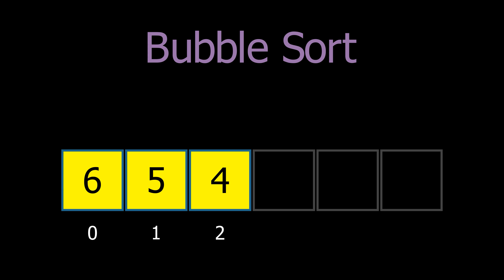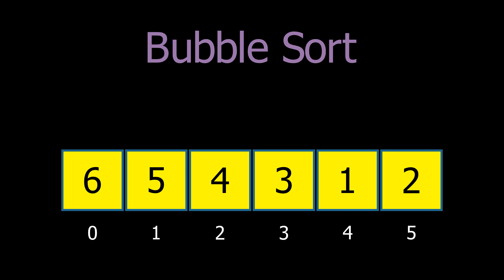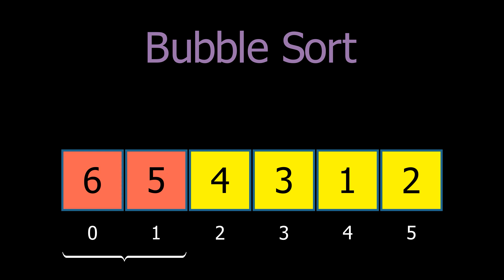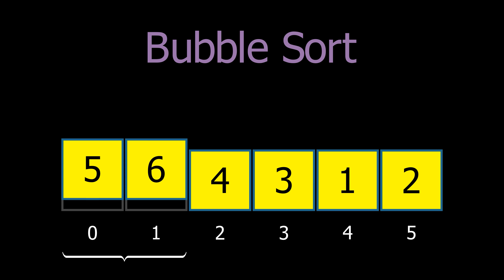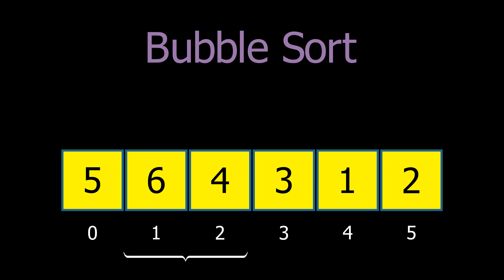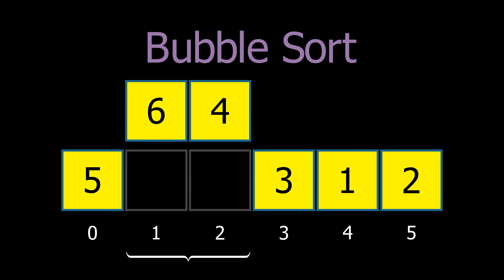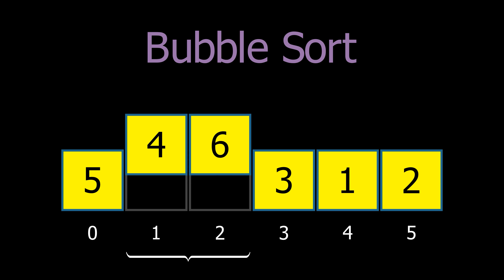In this video, we will discuss some popular sorting algorithms. Let's start with bubble sort. Bubble sort works by repeatedly stepping through the list, comparing adjacent elements, and swapping them if they are in the wrong order.